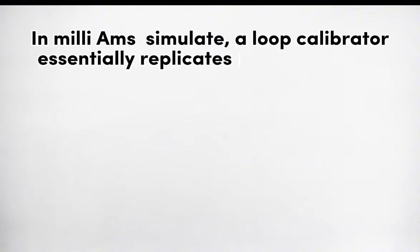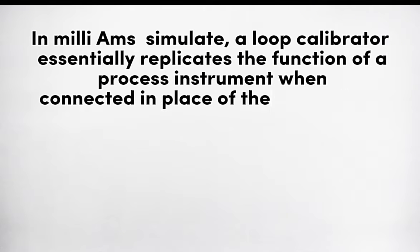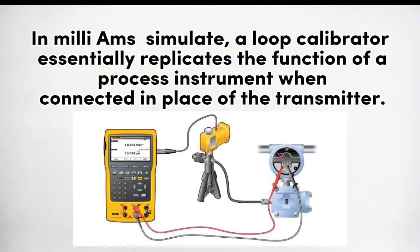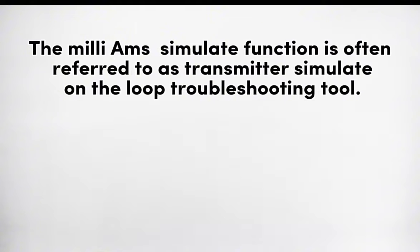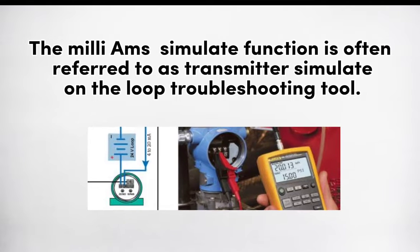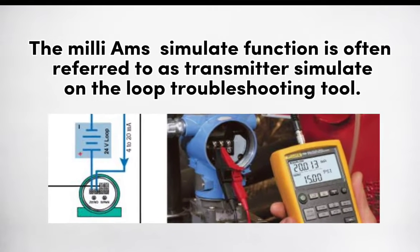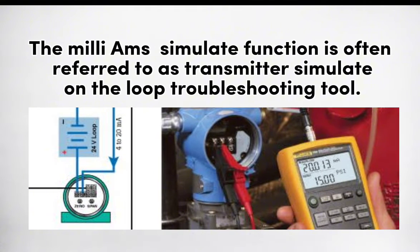In milliamp simulate mode, a loop calibrator essentially replicates the function of a process instrument when connected in place of the transmitter. The milliamp simulate function is often referred to as transmitter simulate on the loop troubleshooting tool.